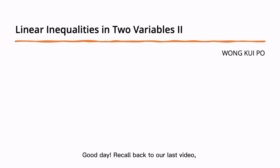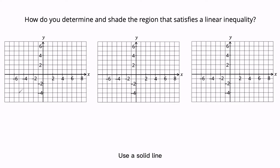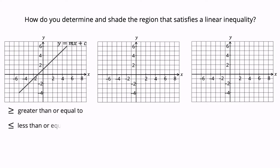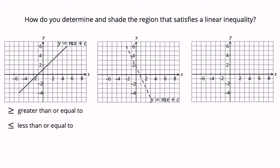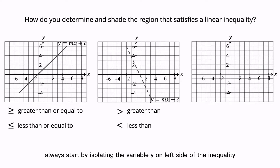Today, we go back to our last video. We have learned the linear inequality in two variables. To graph the inequality, graph the equation of the boundary. Use a solid line if greater than or equals to, or less than or equals to is used, because the boundary is included in the solution. Use a dashed line if greater than or less than is used, to indicate that the boundary is not part of the solution. In a graph of linear inequality, always start by isolating the variable Y on the left side of the inequality.